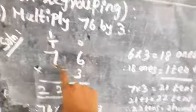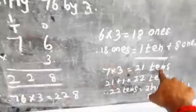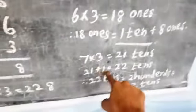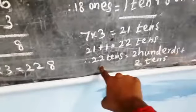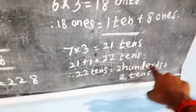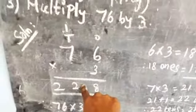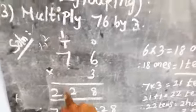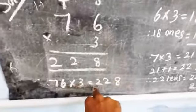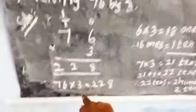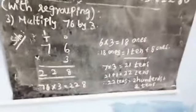Then multiply seven by three: seven threes are twenty-one. Write the digit in the tens place. Twenty-one plus the carried one equals twenty-two tens. Twenty-two tens equals two hundreds plus two tens. Write two in the tens place and carry two to the hundreds place. There are no other numbers, so write two in the hundreds place. Therefore seventy-six into three equals two hundred and twenty-eight — that is multiplication with regrouping.